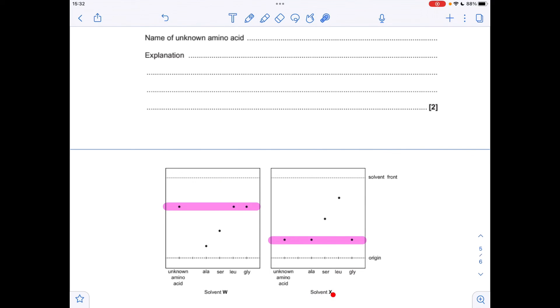Whereas when you switch to solvent X, we're getting alanine and glycine. So obviously the unknown amino acid's got to be glycine because it's matching the RF value in both solvents.